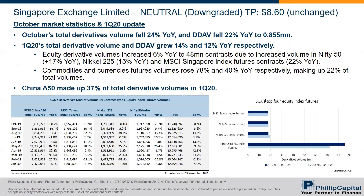For first quarter results, equity derivative growth is mainly due to Nifty 50, Nikkei 225, and MSCI Singapore index futures. Commodities and futures also did well, growing 78% and 40% year-on-year respectively. Currency and commodities derivative volume is around 22% of total volume, while equity derivatives is around 78%.